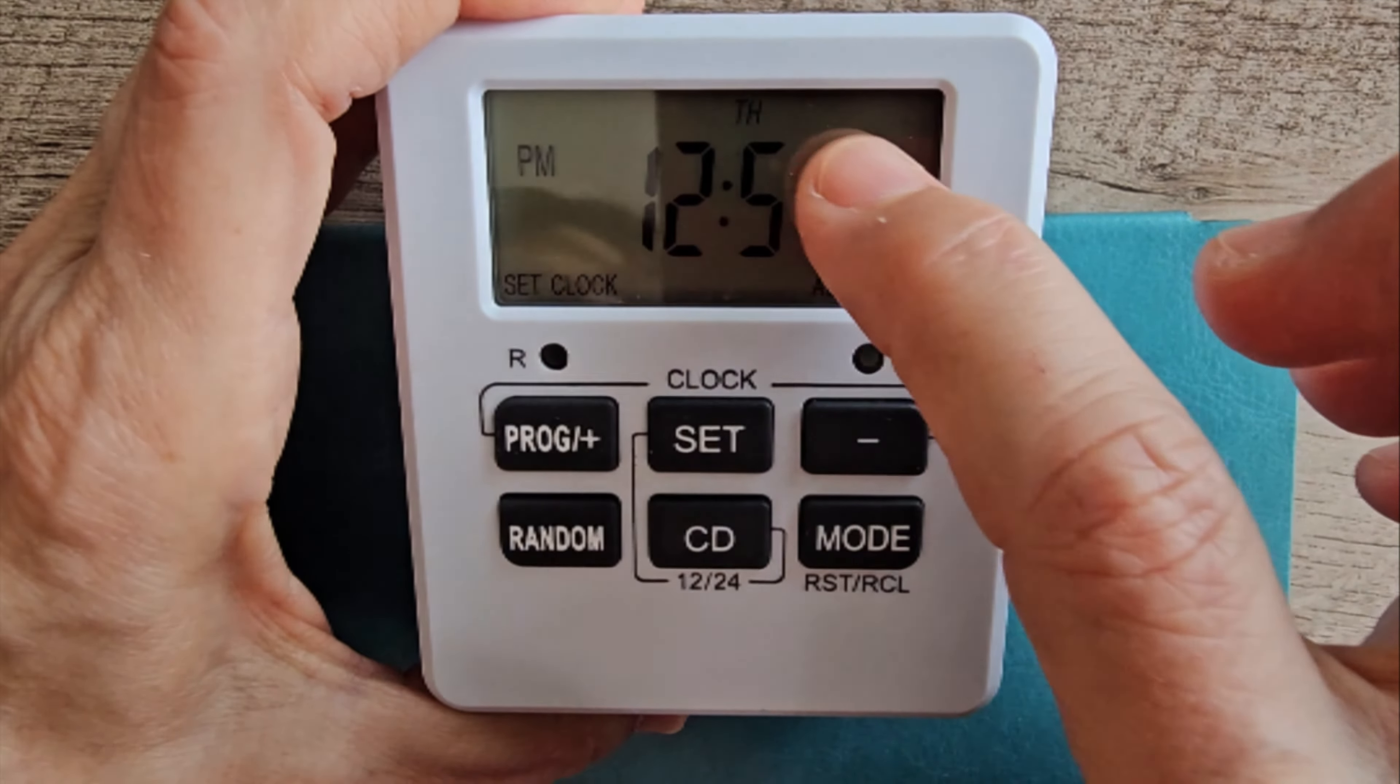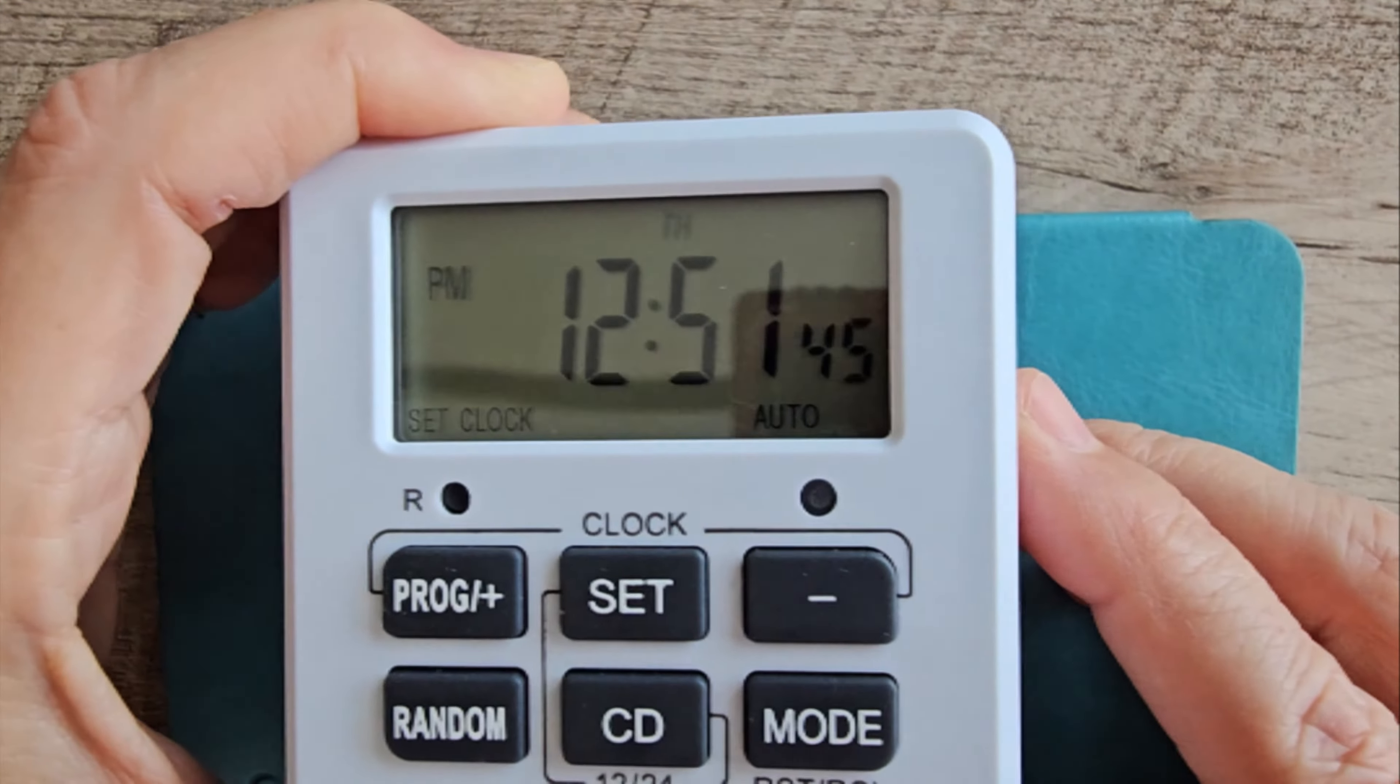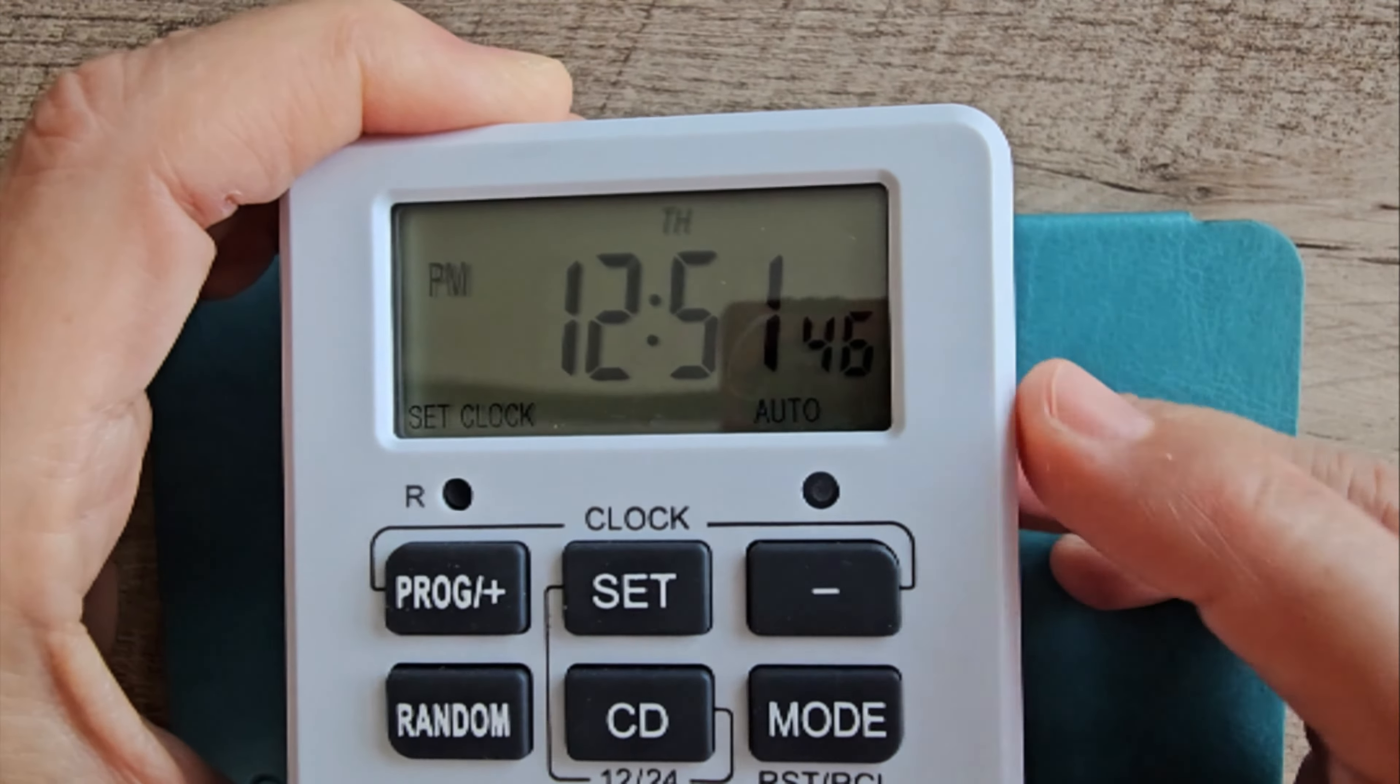This is the Utilitech or Light Sun LTS 130 digital timer, and it's probably the easiest timer I've ever used.